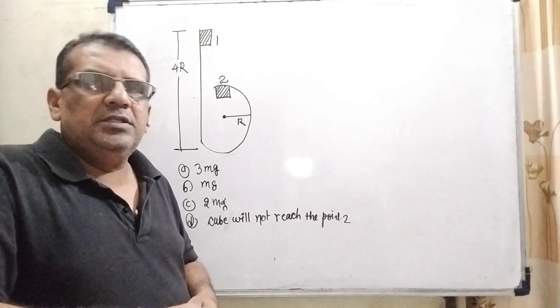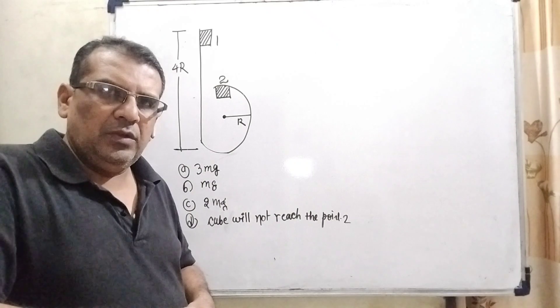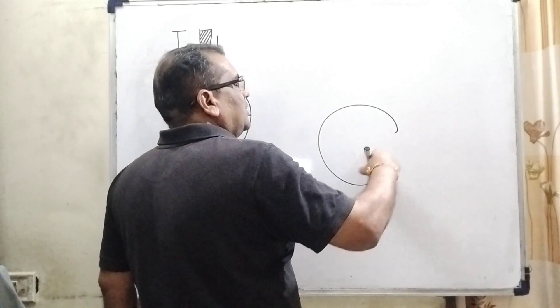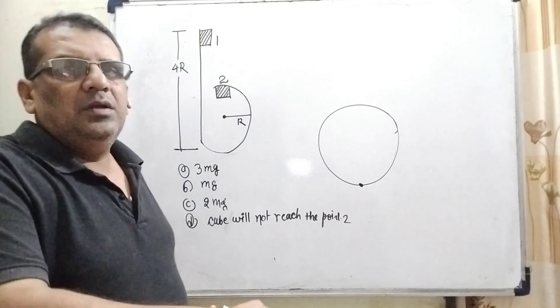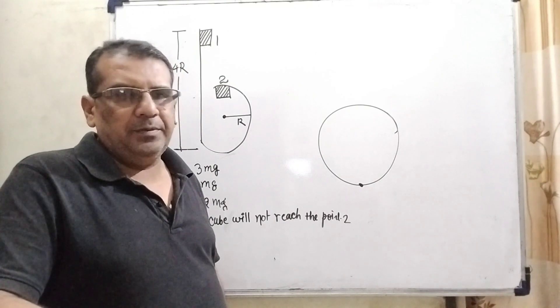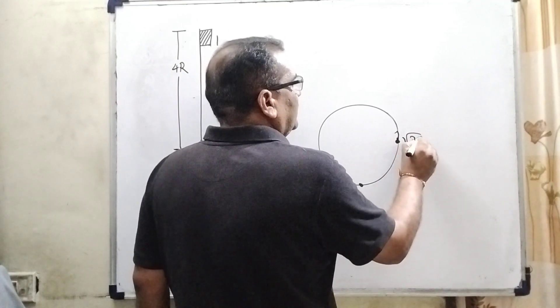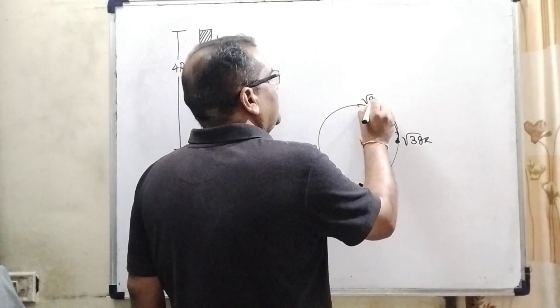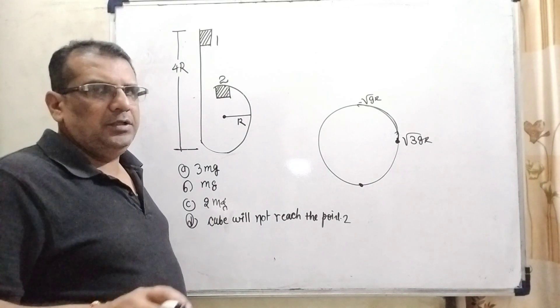This question is related to the laws of conservation of energy and centripetal force. And one thing very important, whenever any object which is moving vertical circular motion, here the lowest point, maximum velocity should required to complete circle is root 5gr. And here exactly half, that is required 3gr. And here that is required greater than gr. So, this is the concept we have using in this question.